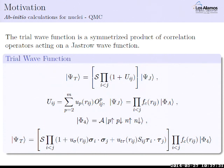The point is this works: you can get these correlation operators from the nuclear Hamiltonian with appropriate boundary conditions. Green's Function Monte Carlo projects out the ground state, so it principally works even without perfect correlations, but it's nice to have something decent to start with.